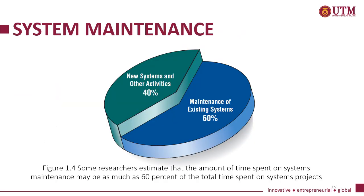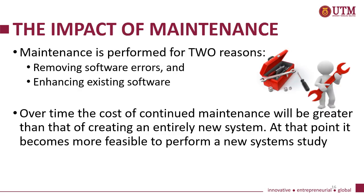This figure shows the importance of system maintenance. Some researchers estimate that the amount of time spent on system maintenance may be as much as 60% of the total time spent on system projects. Maintenance can have a huge impact on the system. Maintenance is performed for two reasons: one, removing software errors, and two, enhancing existing software. Over time, the cost of continued maintenance will be greater than that of creating an entirely new system, at which point it becomes more feasible to perform a new system study.